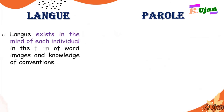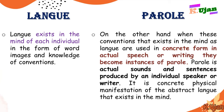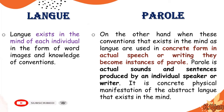Here is another difference. Langue exists in the mind of each individual in the form of word images and knowledge of conventions — whatever language knowledge is in one's mind, that is langue. On the other hand, when these conventions that exist in the mind as langue are used in concrete form — in actual speech or writing — they become instances of parole. Parole is the actual sounds and sentences produced by an individual speaker or writer. It is the concrete physical manifestation of the abstract langue that exists in the mind, whether in the form of a written paragraph or a speech — that is parole.